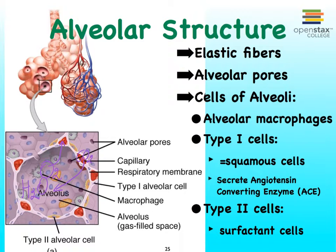Each one of these alveoli has a pore in it that allows it to be connected to the next alveolus. So when we bring in air and it goes down the pharynx, down the larynx into the trachea, down the different bronchial and bronchiolar levels all the way into the alveoli, that air is going to reach some alveoli and easily spread throughout all the alveoli in an alveolar sac because of those pores.